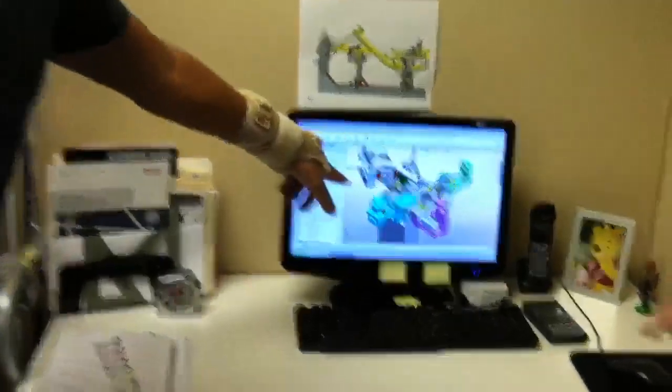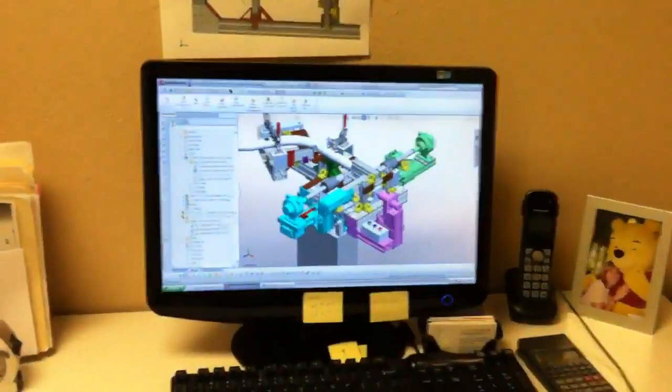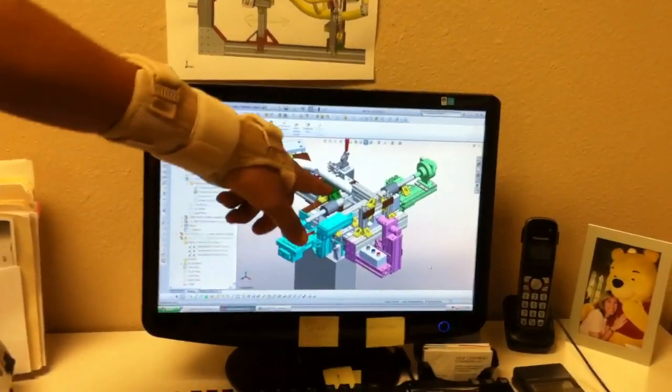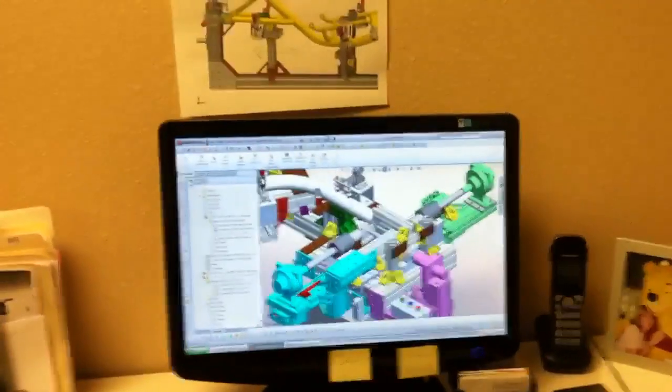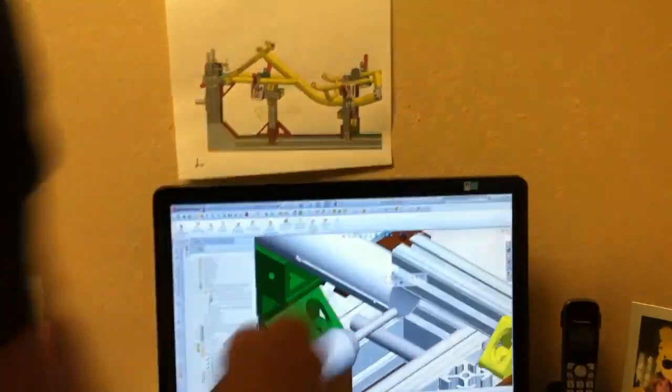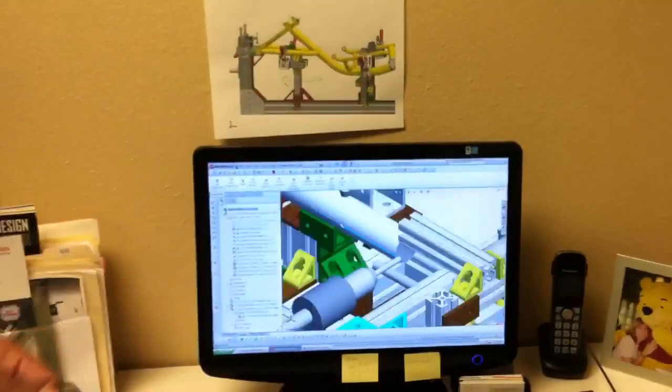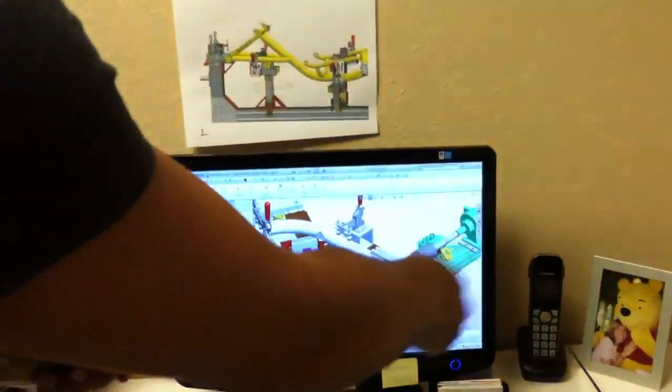So here it's the mainframe notcher and slotter. It's the tool to make this kind of operation. And right now we do this by hand. We have this tool but our operator he has to crank by hand.